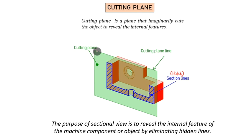Going to the next slide on the cutting plane. Once again referring to the sectional view: this portion is the cutting plane, and this is the cutting plane line. These are called section lines.